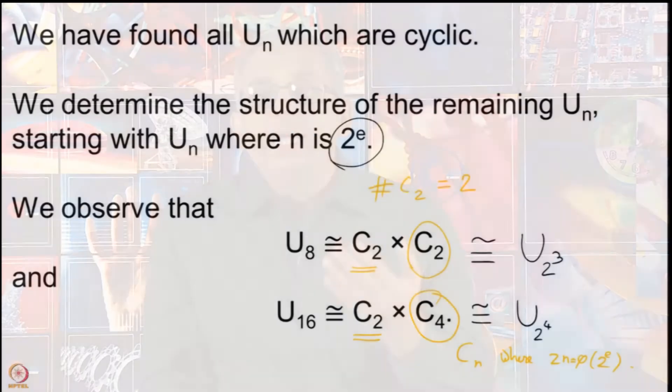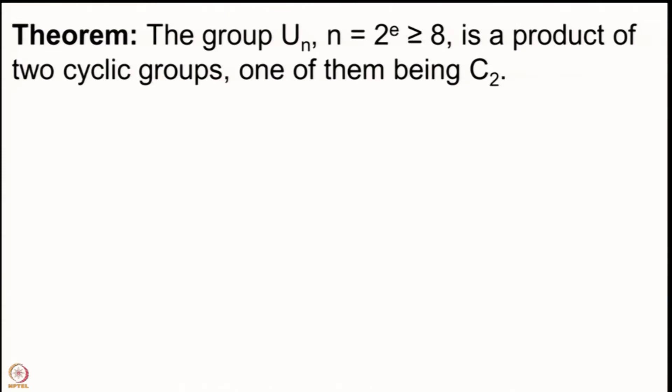We would like to show that when n is equal to a power of 2, the group of units is almost a cyclic group — it is not really cyclic but it is a product of 2 cyclic groups, one of them being of order 2. The result we are going to prove is: the group U(n) for n = 2^e ≥ 8 is a product of 2 cyclic groups, one of them being C₂.